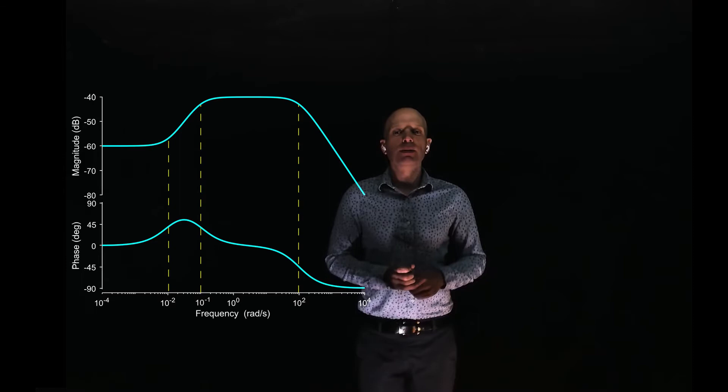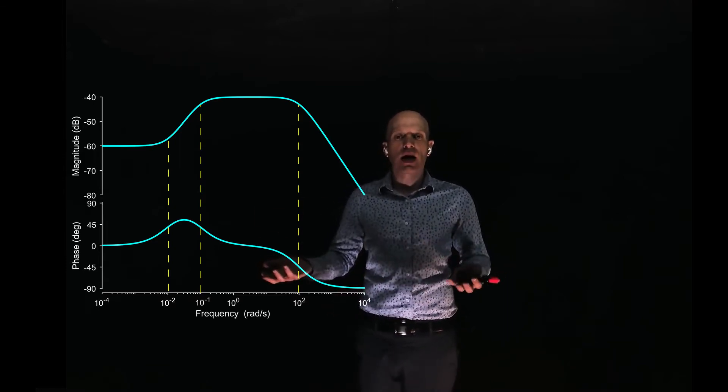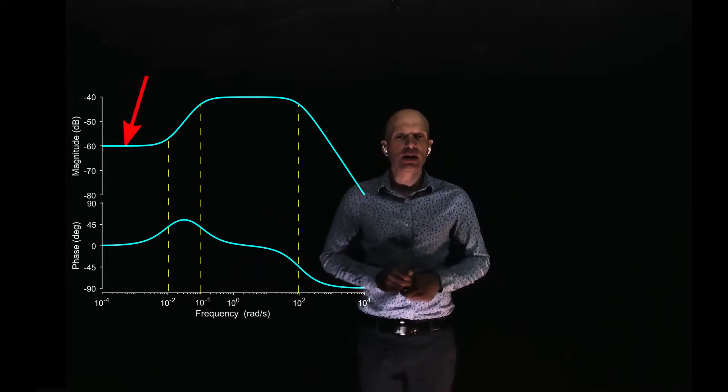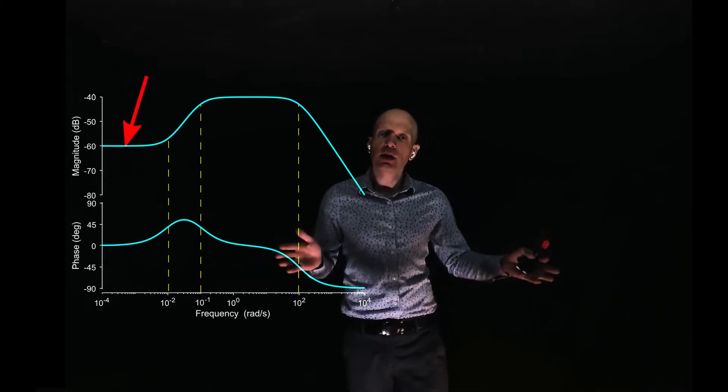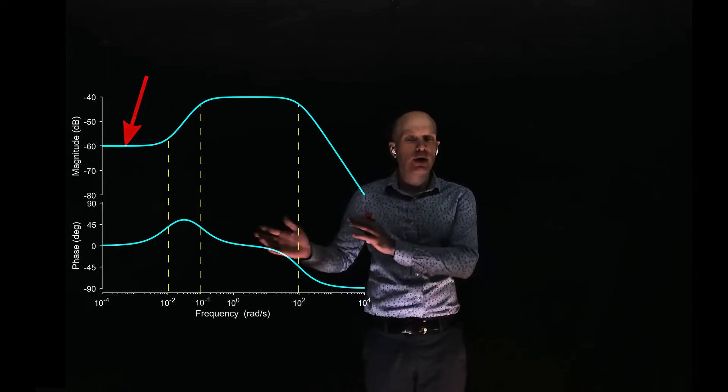This is the Bode plot that we obtained experimentally. What can we see here? We simply have a constant gain that is acting on the Bode plot. We see that it's shifted down by negative 60 decibels, and because it's a flat line, that implies that there are no zeros or poles acting at that specific range of frequencies.